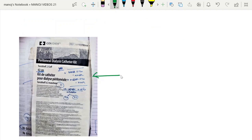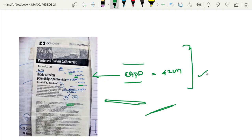This is the wrapper of a CAPD catheter. Adult size is 42 centimeter and it comes in only two sizes, one is adult and pediatric size. Pediatric size, even though wrapper is not there, they have mentioned it is 32 centimeter. Adult size it is 42 centimeter, comes with two cuffs. In the next video I will show you the catheter. So these are all the wrappers of the catheters so far we have seen.